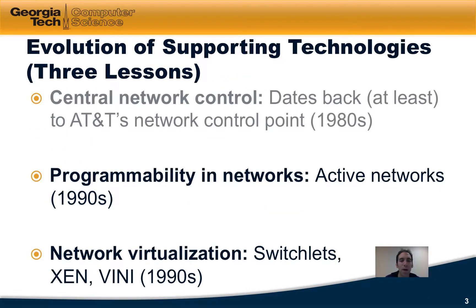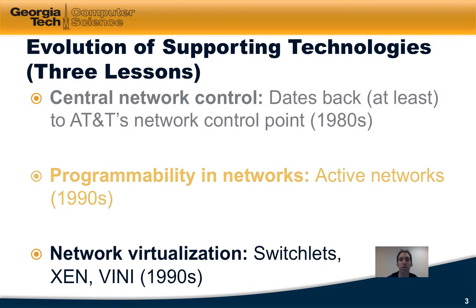To remind you where we are in this module, we just completed a lesson on the history of central network control, which dates back at least to the 1980s in AT&T's network control point. We're now going to study the origins of network programmability, in particular its roots in the active networks projects of the 1990s.